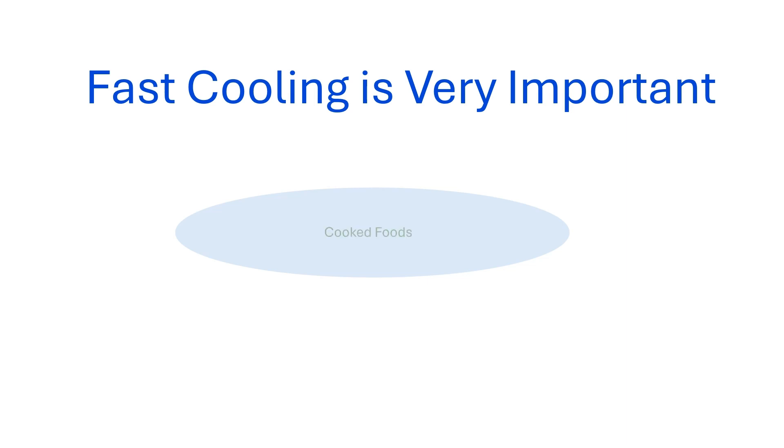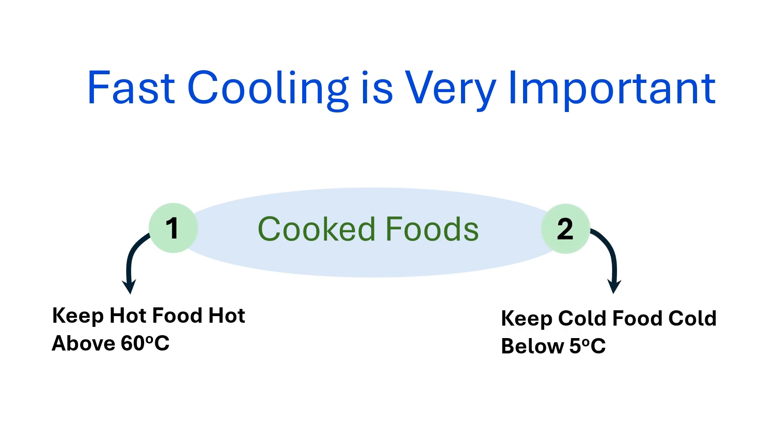The general rules for cooked foods are: keep hot food hot, that is above 60 degrees C, and keep cold food cold, that is below 5 degrees C. The refrigerator temperature usually varies within 1 and 4 degrees C.